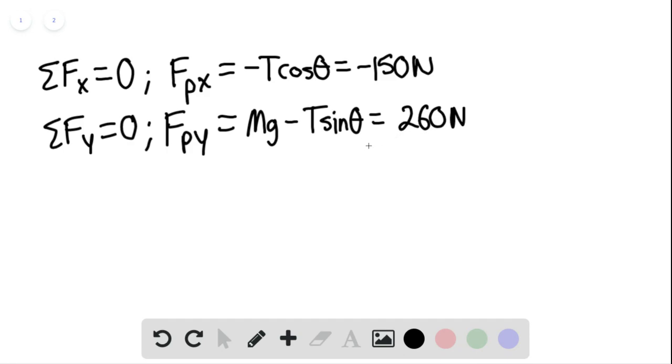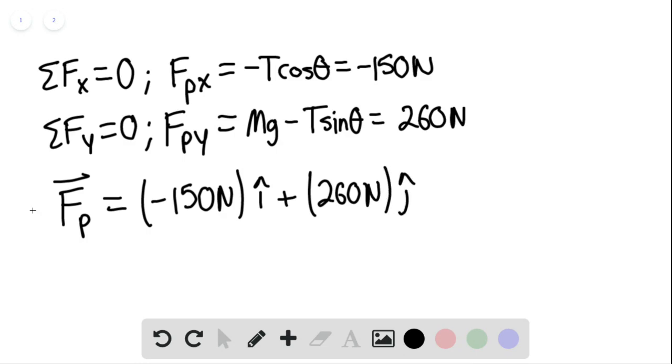If we express the force of the hinge in vector notation, this would equal negative 150 newtons i-hat plus 260 newtons j-hat. This is our final answer.